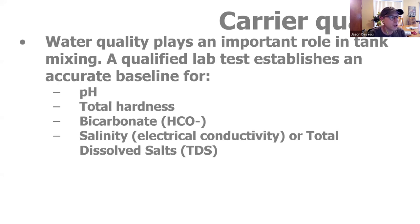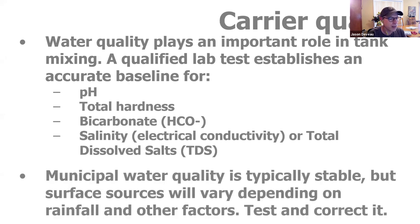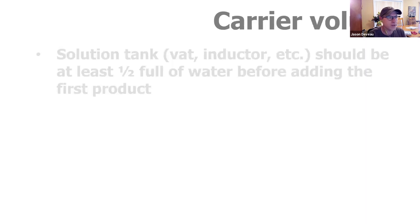Here are the four things you want from your lab test: you want to know the hardness of the water, your bicarbonate levels, your total dissolved salts or salinity or conductivity — those are the negative ions in the water. If you're spraying with municipal water, it's pretty stable, but surface sources will vary depending on rainfall, drought, and other factors. So you need to consider that when you test.